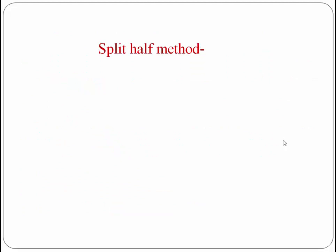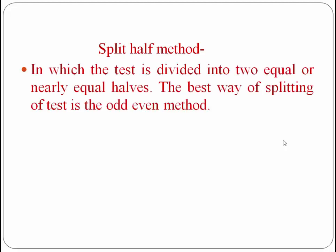The first method of internal consistency reliability is the split-half method, in which the test is divided into two equal or nearly equal halves. The best way of splitting the test is the odd-even method, where we divide the items of the test into odd-numbered items and even-numbered items.